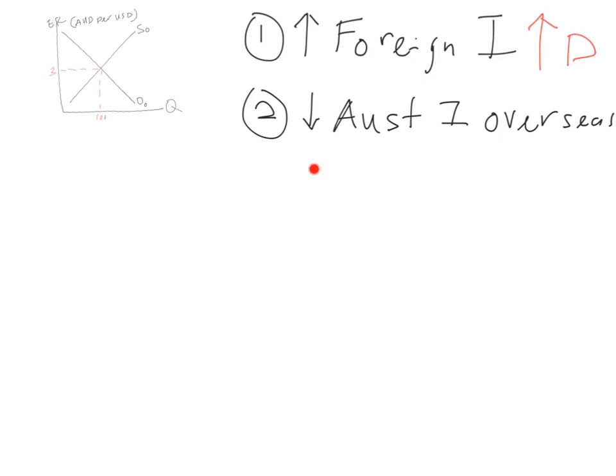What about the situation of Australian investors investing less overseas? Normally, if you're an Australian investor and you want to buy a factory in Vietnam, you would have to sell Australian dollars in the foreign exchange market to buy the Vietnamese dong — increasing the supply of Australian dollars. In this case, you're investing less overseas, so the amount of Australian dollars you normally sell will decrease. There is going to be a fall in the supply of Australian dollars.